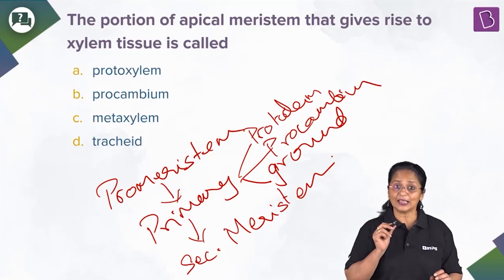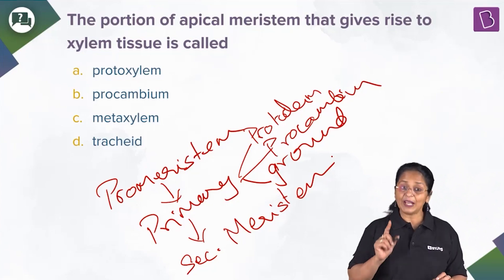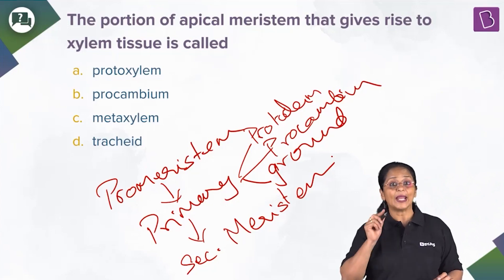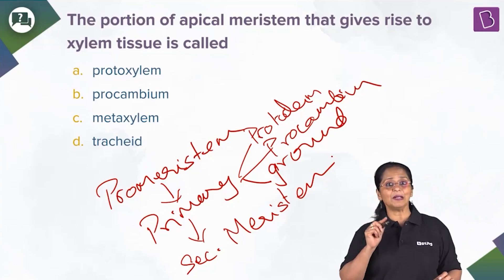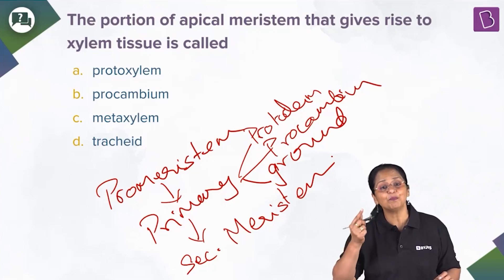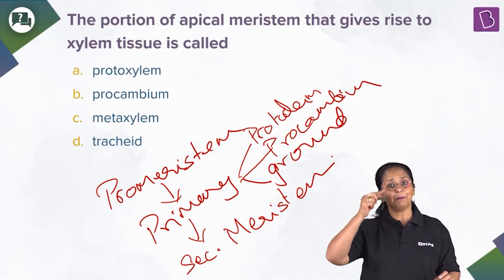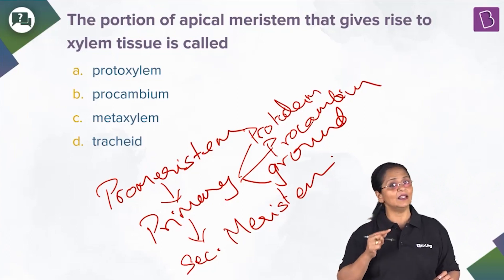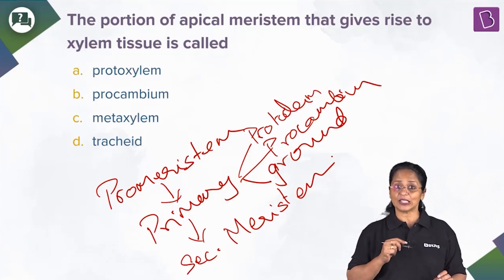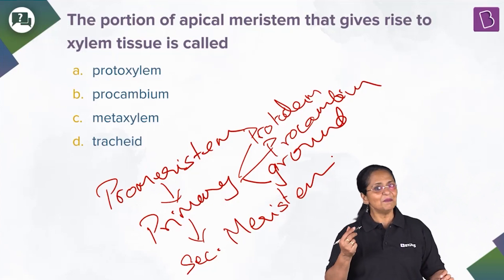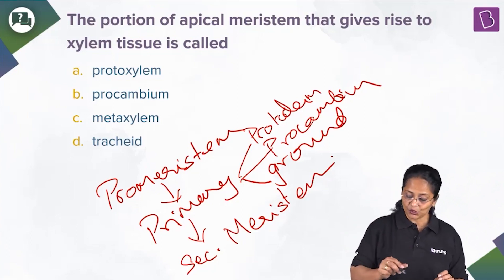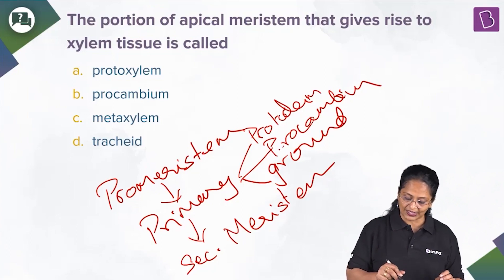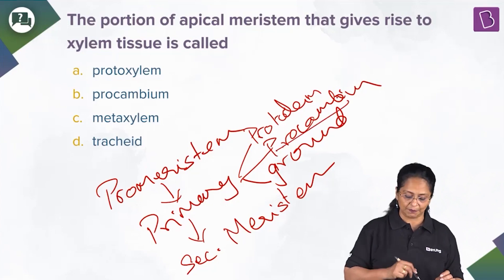Now let us look at the options. The portion of apical meristem that gives rise to xylem tissue — apical meristem is classified based on position; it is found at the shoot apex and root apex. We already know what gives rise to xylem: it is the procambium. Proto-xylem is the first-formed primary xylem, and meta-xylem is formed later — so protoxylem is the wrong option.